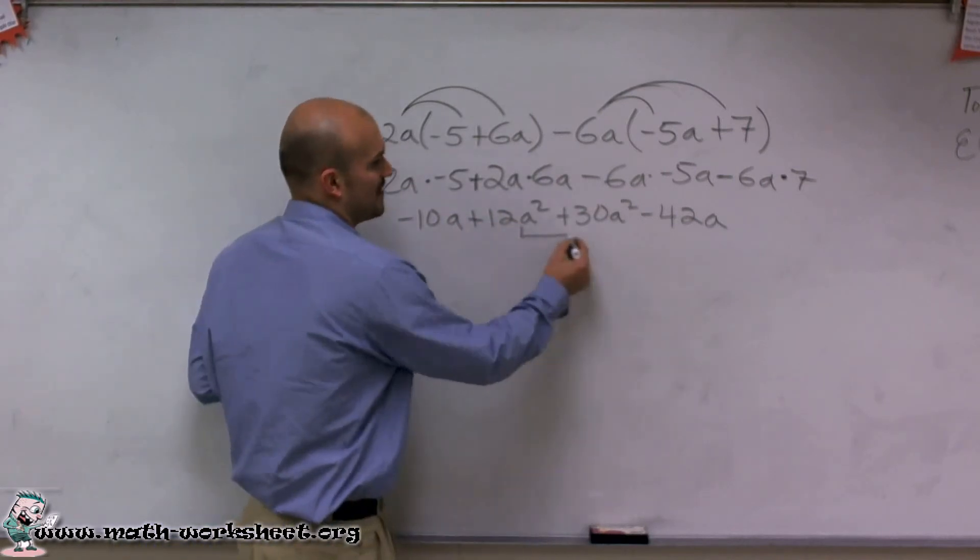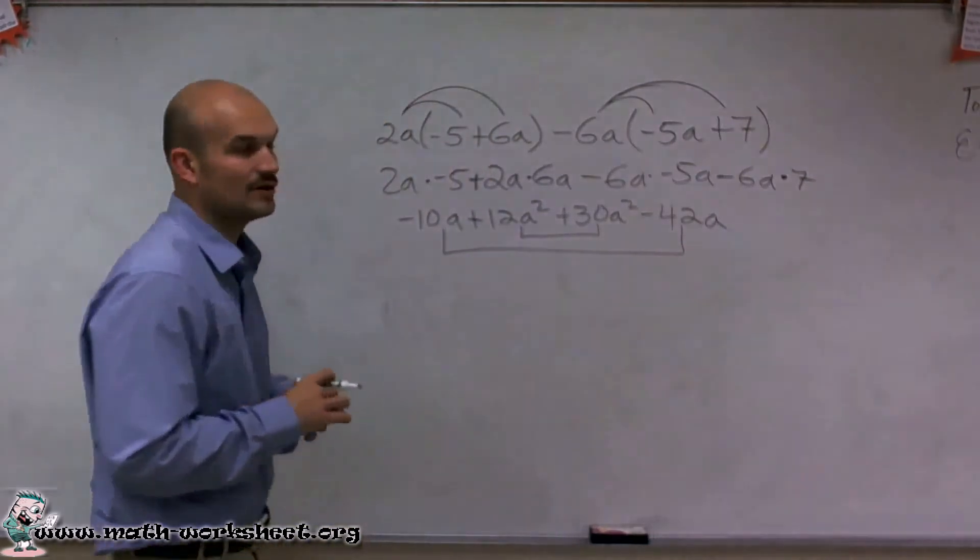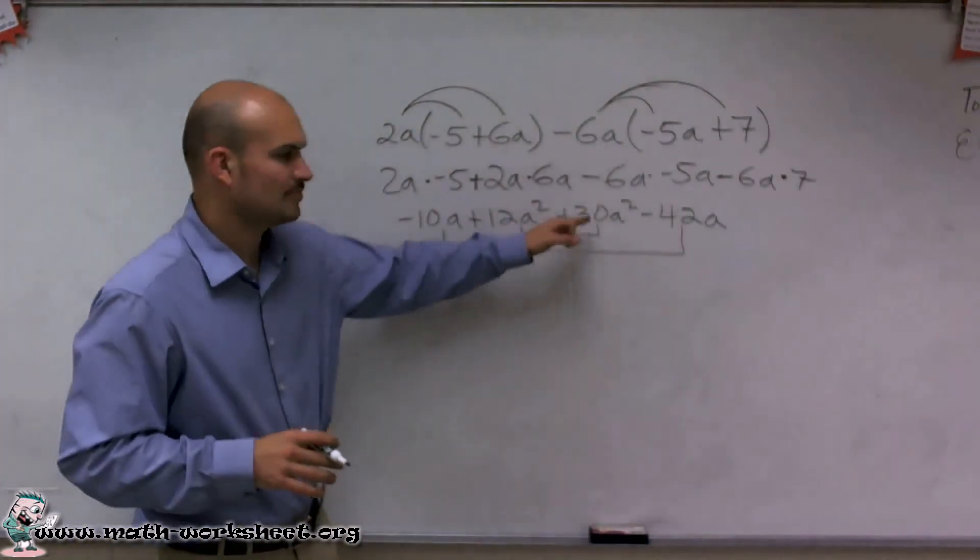I can only combine my factors of a squared plus a squared, and negative 10a plus negative 42a. This is 12a squared plus 30a squared.